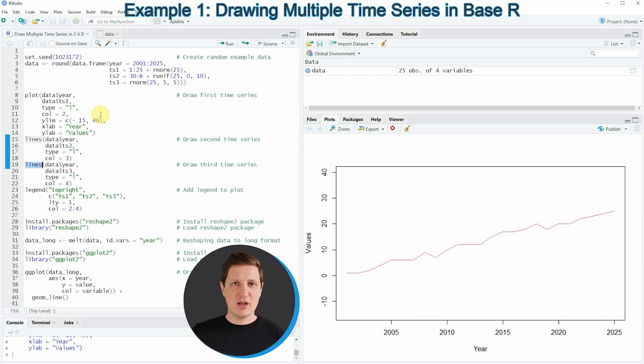If you want to initialize a new plot you have to use the plot function, and if you want to add another plot on top of the already existing plot you have to use the lines function. If we run lines 15 to 18 of the code you can see that a second time series is added to our plot, and if we run lines 19 to 22 of the code our third time series is added to the plot as well.